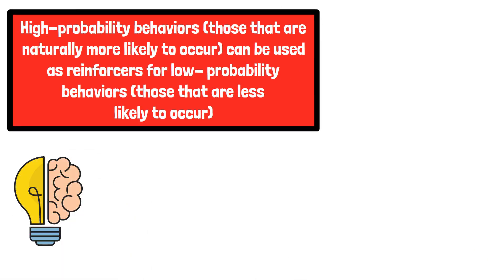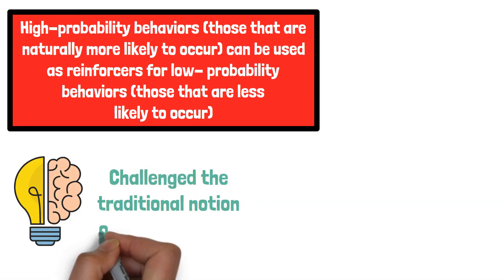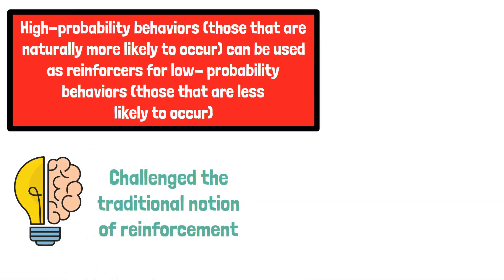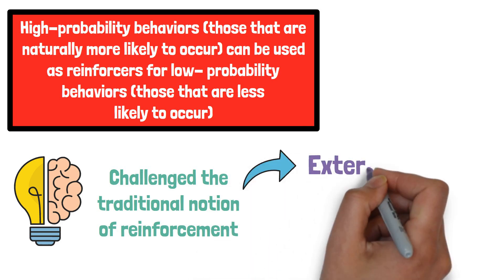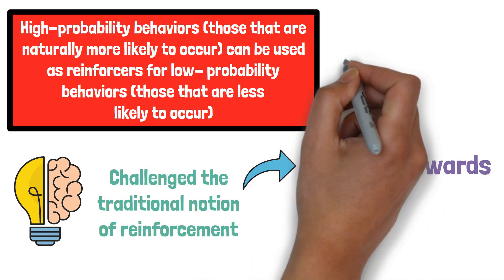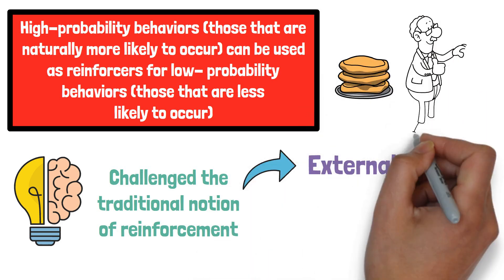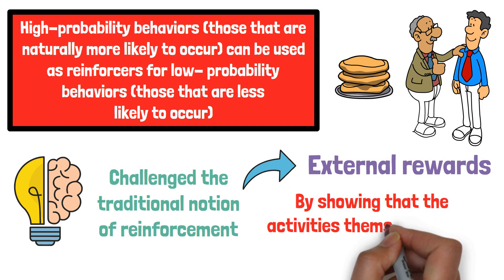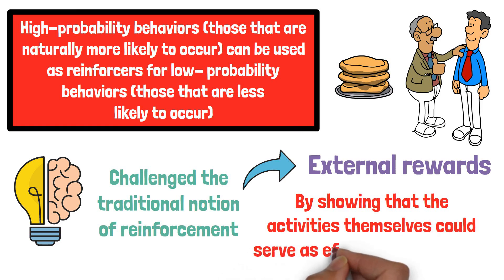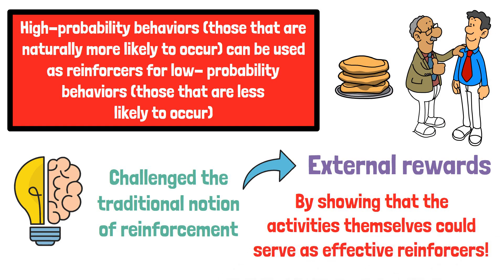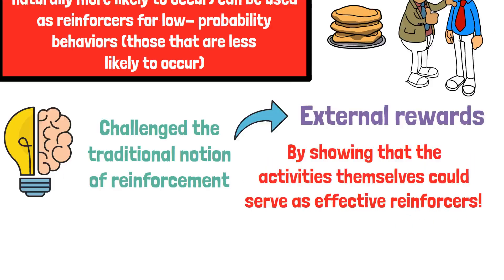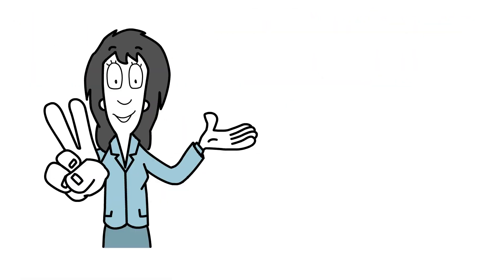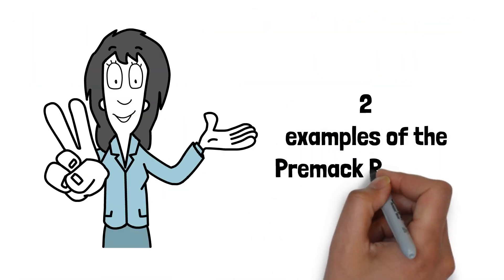This concept challenged the traditional notion of reinforcement, which primarily relied on external rewards like food or praise, by showing that the activities themselves could serve as effective reinforcers. Here are two examples of the Premack principle.